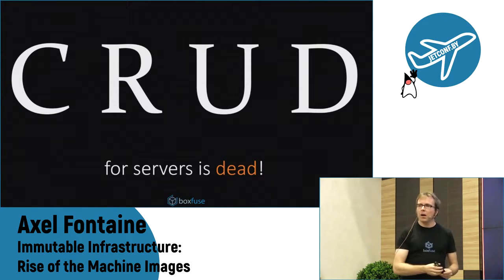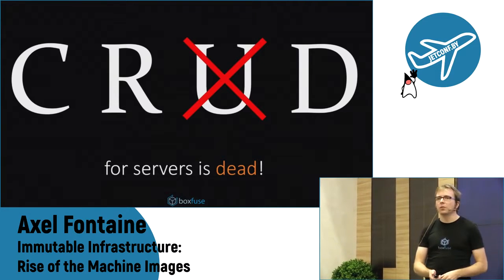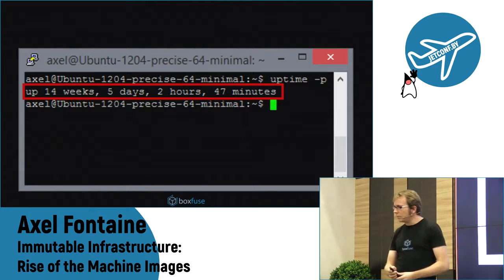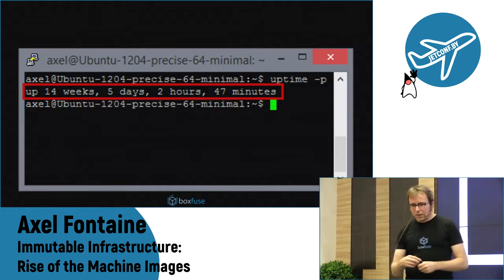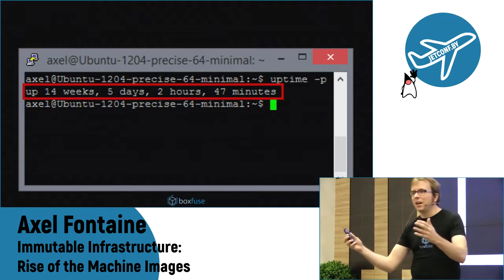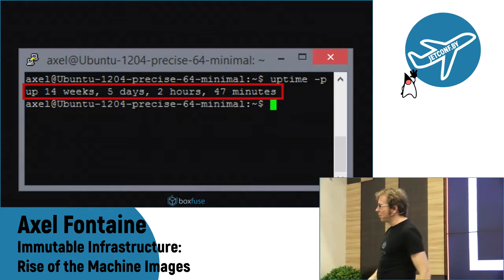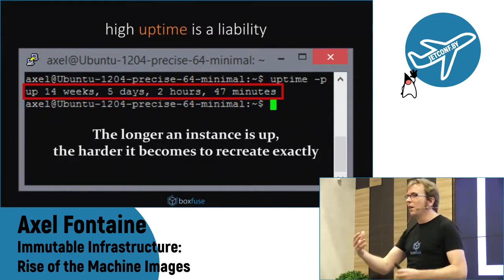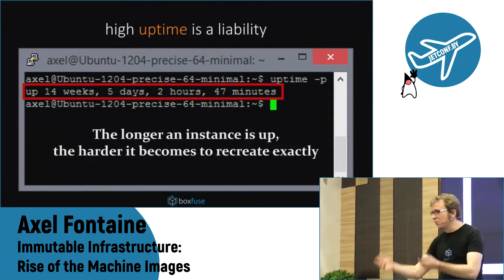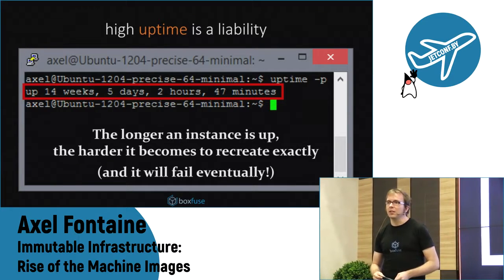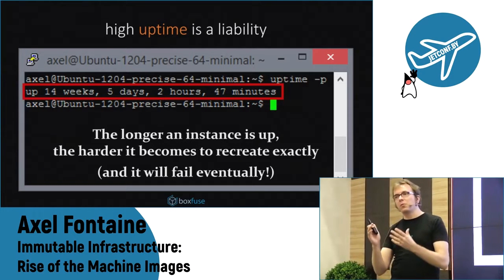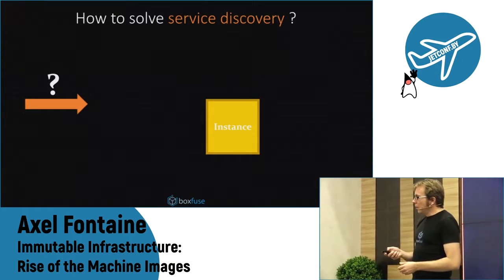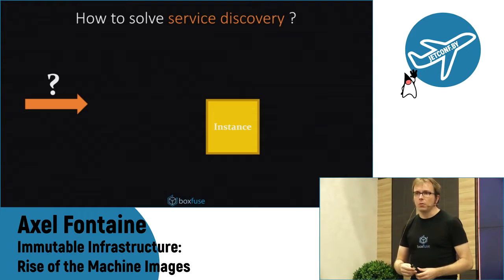That is actually a good thing — we are effectively eliminating CRUD for servers. We are still creating them, accessing them, and disposing of them, but we are not updating them in place anymore. We used to pride ourselves on 'I have this Linux machine and haven't rebooted it in three years.' But the longer a machine stays up, the harder it is to recreate exactly if you need a second one or if it dies and you need to rebuild it. And the bad news is it will fail eventually — whether due to hardware or software. So those very long uptimes we used to be so proud of may not be the best idea after all.